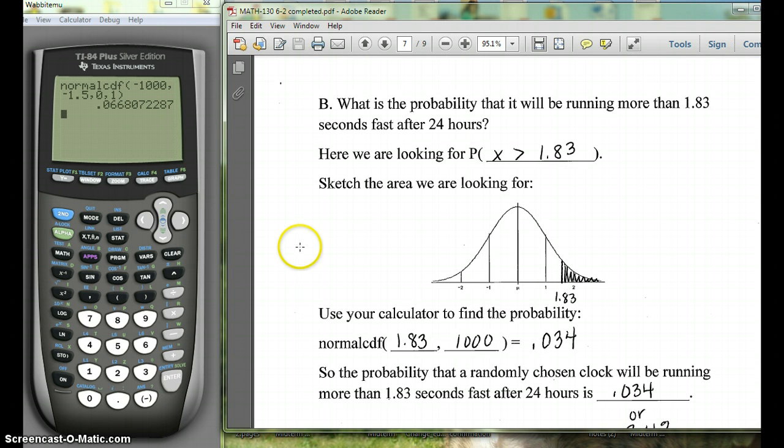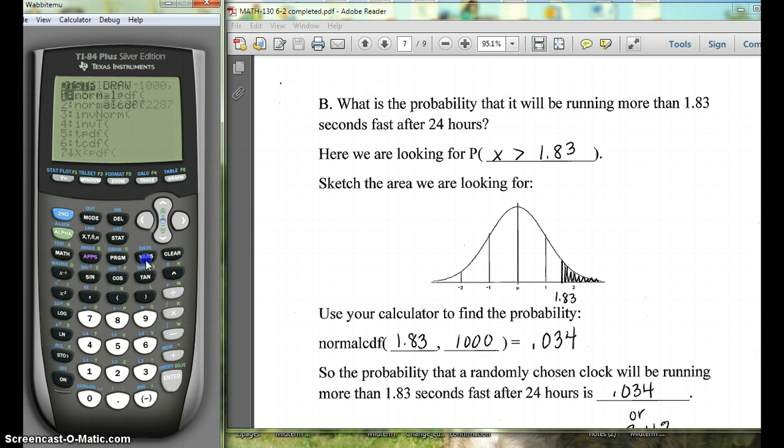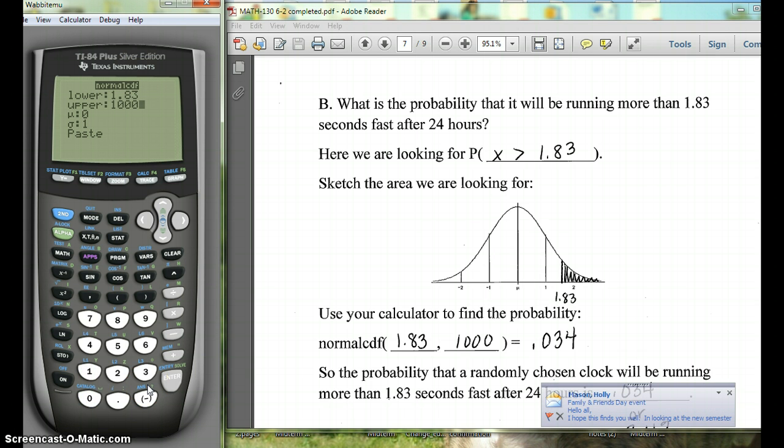So now if we want to do a more than problem, here we want to know what's the probability that it will be running more than 1.83 seconds fast after 24 hours. So again, we'll hit second, distribution, and choose number 2. Here we want to go from 1.83 to the right. So our lower is 1.83. And then we want to pick a big number, like 1,000. You can make it bigger. 1,000 will do what we need, though.